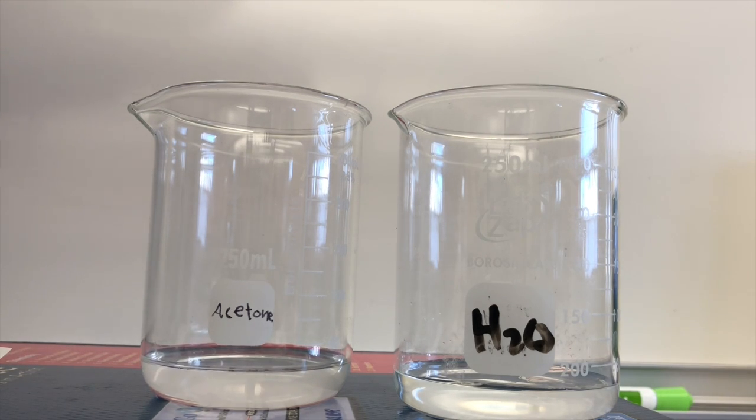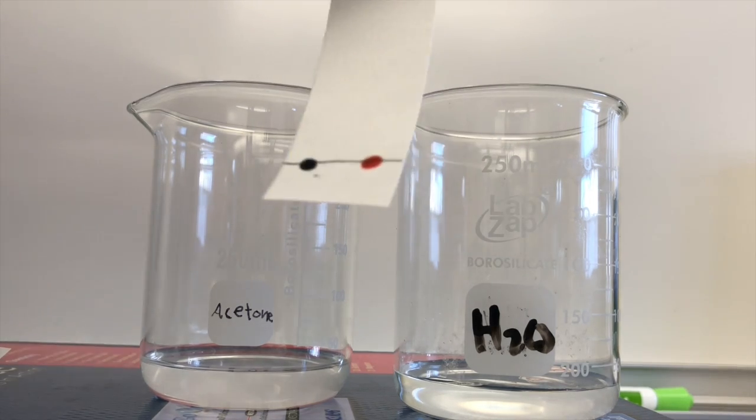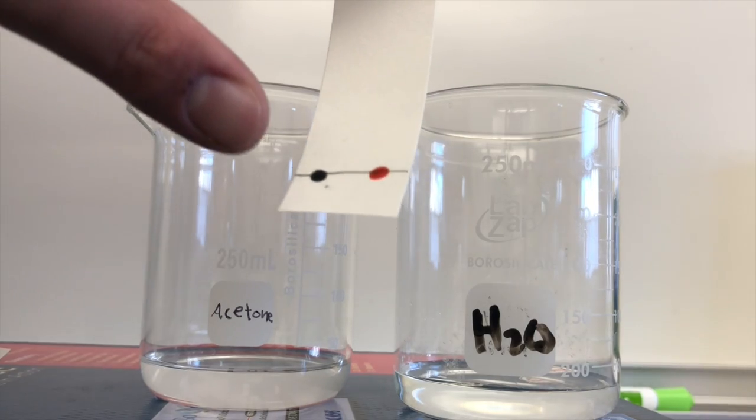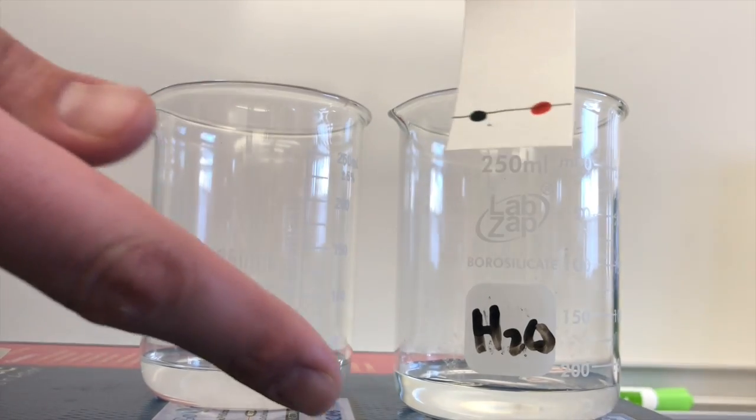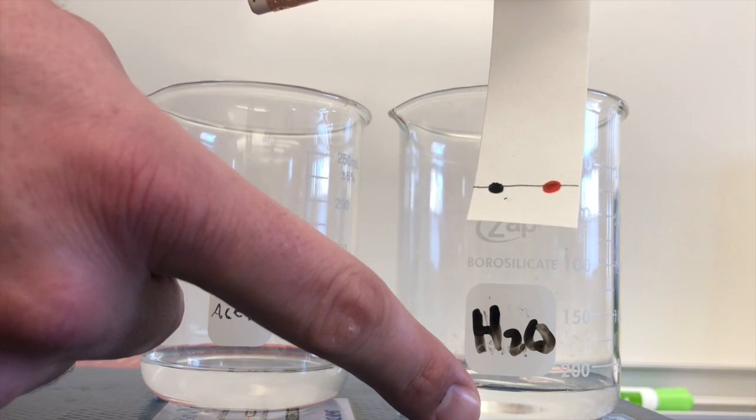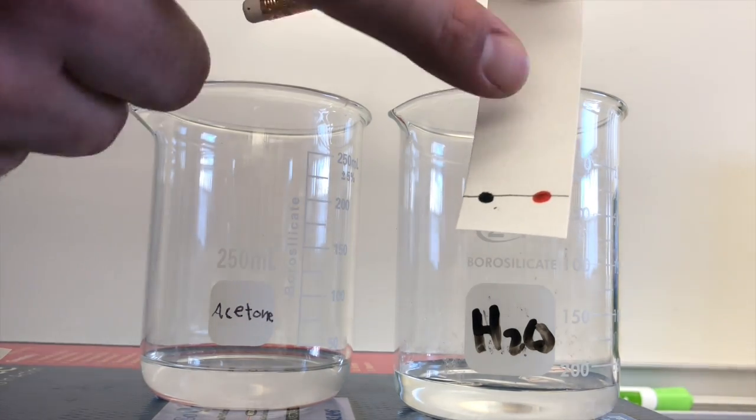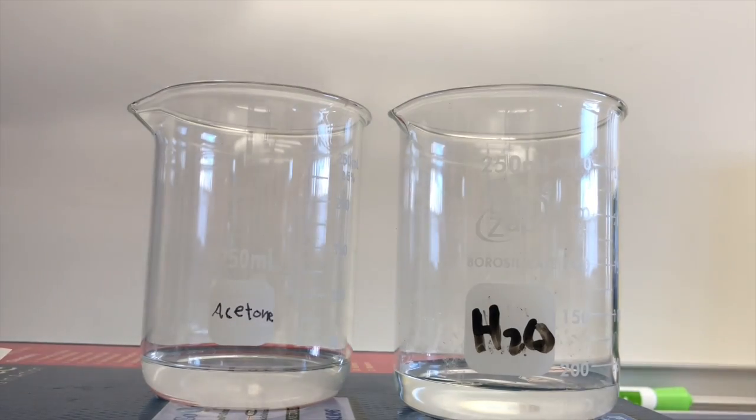One of our phrases we use is like dissolves like so if the washable marker gets dissolved and pulled up the paper that means that it's the same polarity as the liquid. What I mean by that is if the water pulls up the washable that tells you the washable is polar. If it doesn't then it tells you that the washable must be nonpolar.